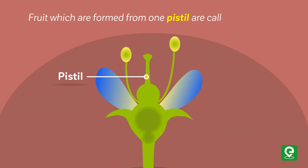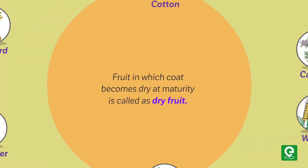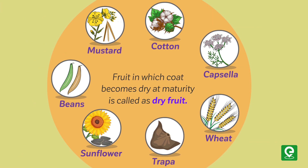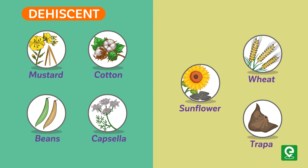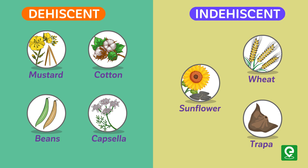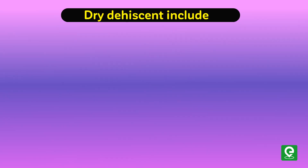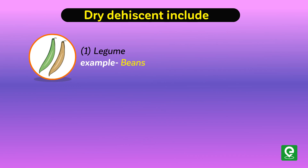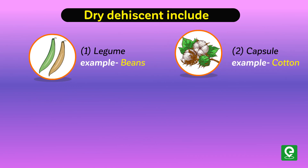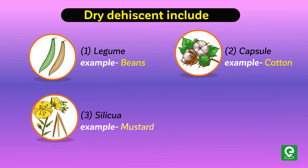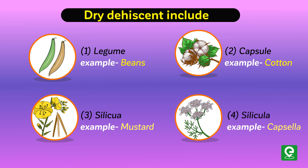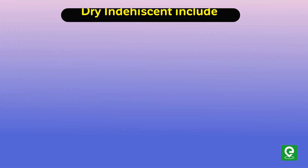Fruits which are formed from one pistil are called simple fruits, and they may be dry or fleshy. A fruit in which the wall becomes dry at maturity is called a dry fruit. Dry dehiscent fruits include: legume (example: beans), capsule (example: cotton), siliqua (example: mustard), and silicula (example: Capsella).